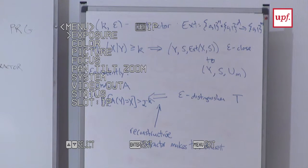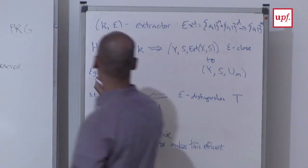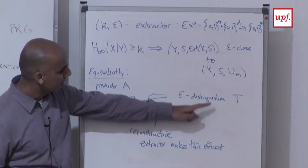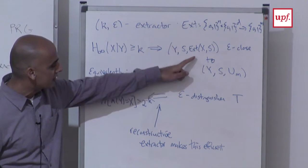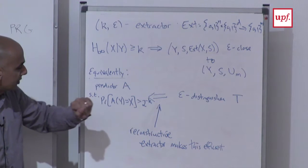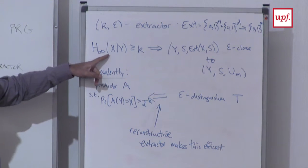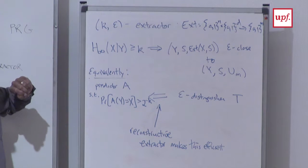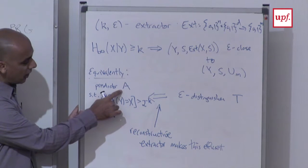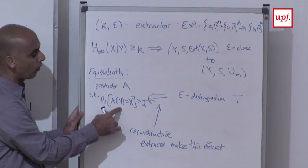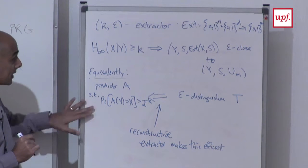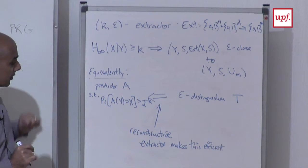Let's look at the contrapositive. An equivalent statement is that if I have a distinguisher between these two distributions — some test T that distinguishes them with advantage epsilon, possibly a computationally unbounded test since we're talking about statistical distance — that implies x does not have entropy at least k given y, which is equivalent to there being some possibly unbounded predictor of x from y that succeeds with more than 2^{-k} probability. Just a restatement of what it means to be an extractor.